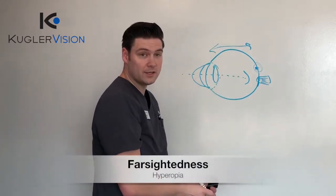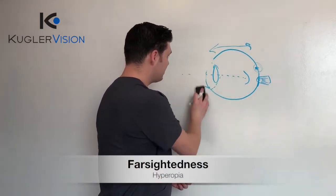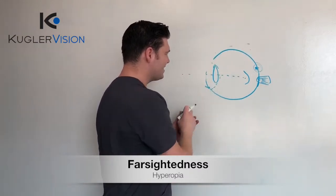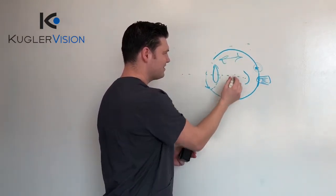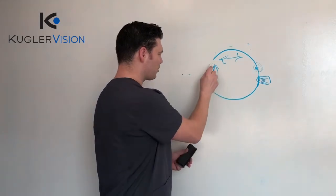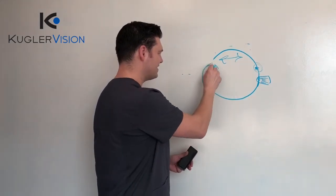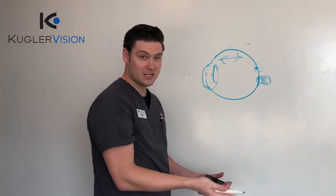With hyperopia, it's quite the opposite. If the eye is too short, or the cornea is too flat, also making the eye shorter, the image is focused on a spot theoretically behind the retina and your macula.